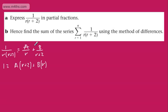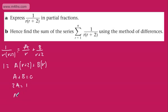If you're not familiar with partial fractions, please check the link. Terms in r give us A + B = 0, and the constant terms give 2A = 1, so A = 1/2, and therefore B must be equal to minus 1/2.